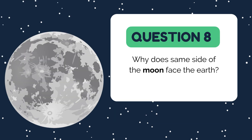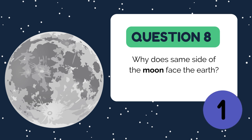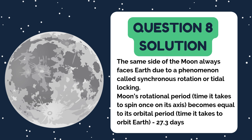Now let's turn our attention to Earth's closest companion. Why does the same side of the Moon always face Earth? This phenomenon is called synchronous rotation, or tidal locking. The Moon's rotational period — how long it takes to spin once on its axis — is equal to its orbital period around Earth: 27.3 days. This alignment keeps the same side of the Moon facing us, creating the familiar view we call the nearside.